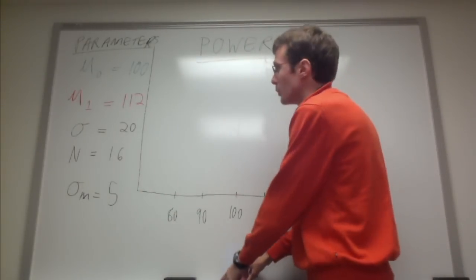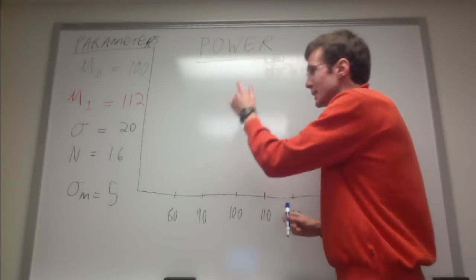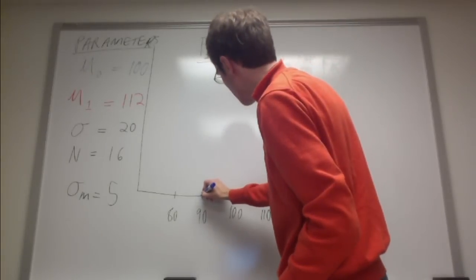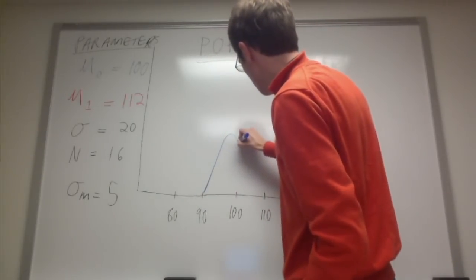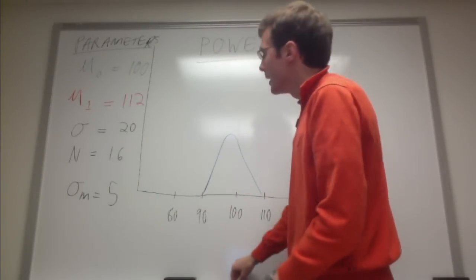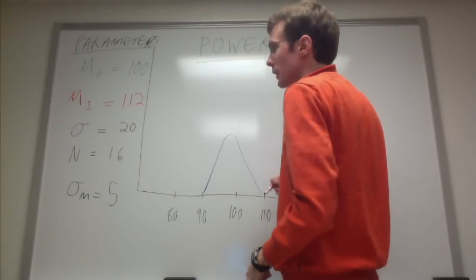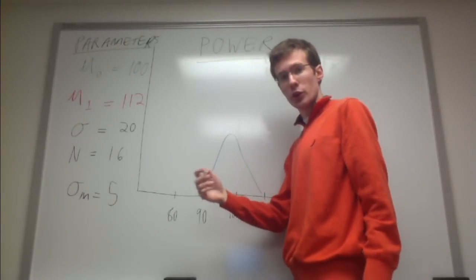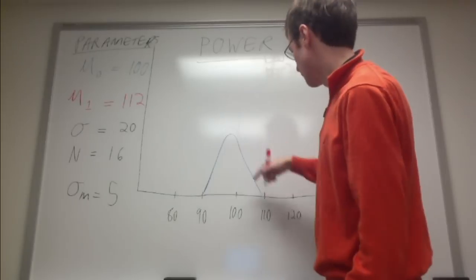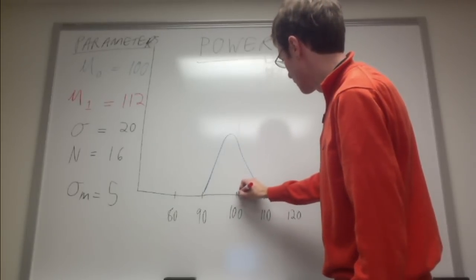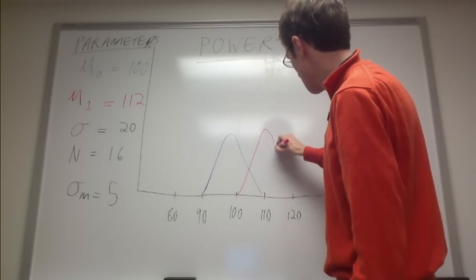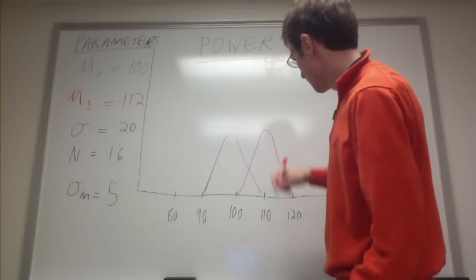So if I were to draw these two populations, our null distribution would be centered at 100, roughly looked like that. And for our alternative distribution, it's centered at 112. So slightly to the right of this. Something like that.